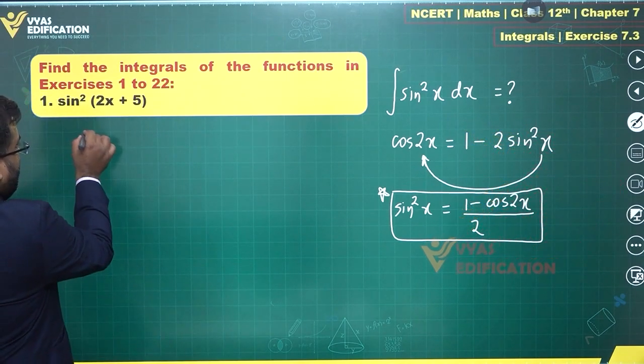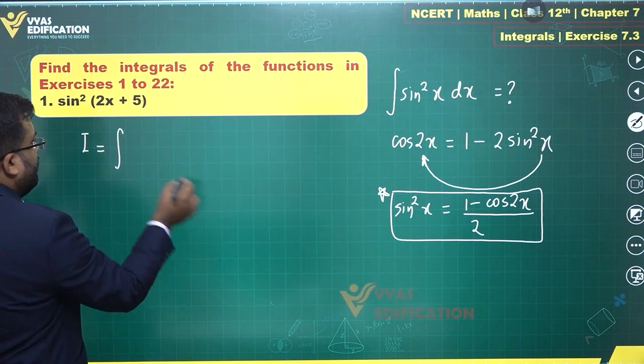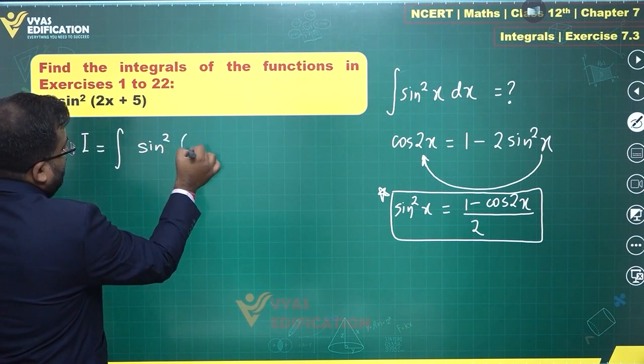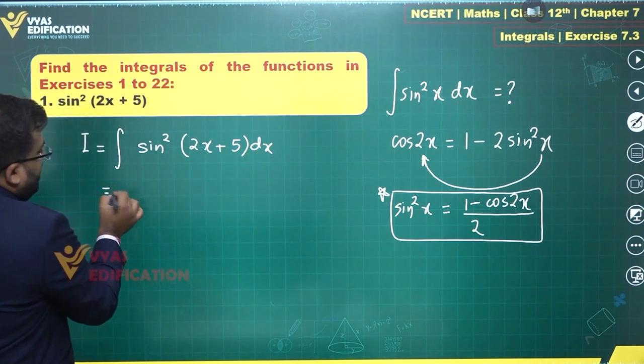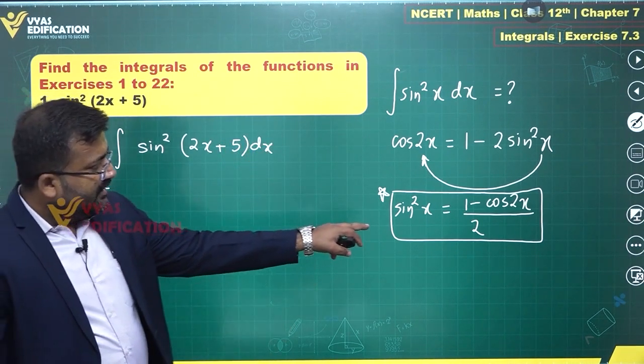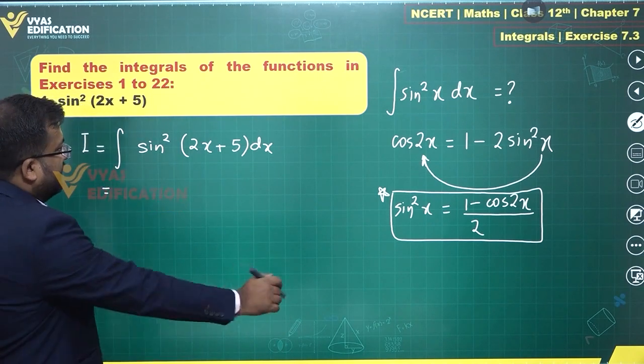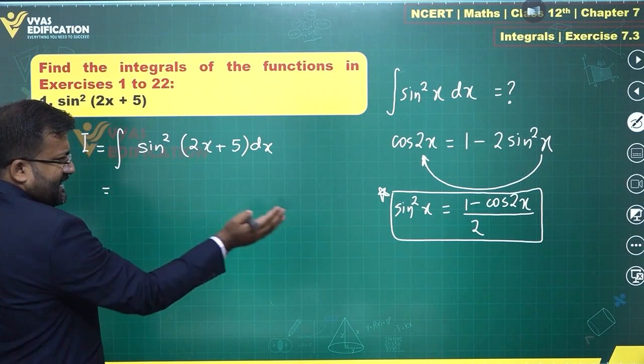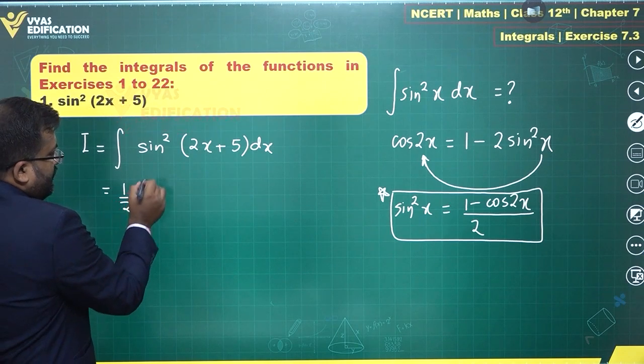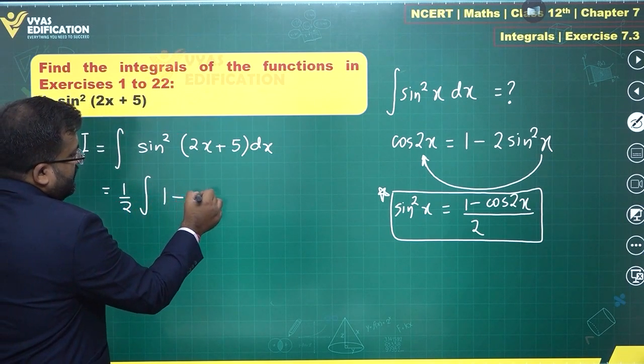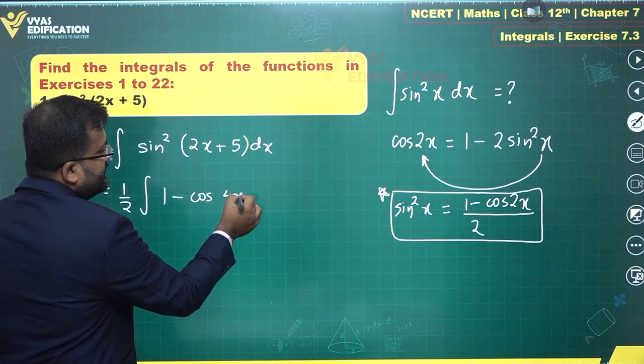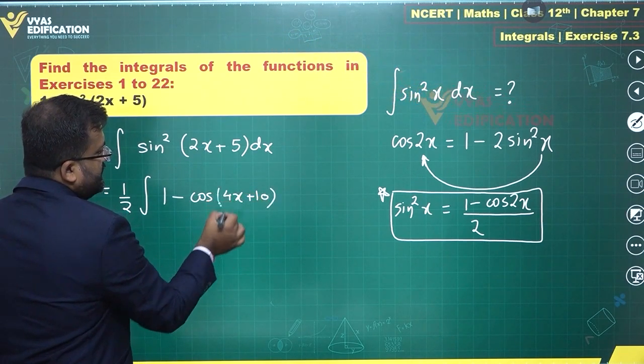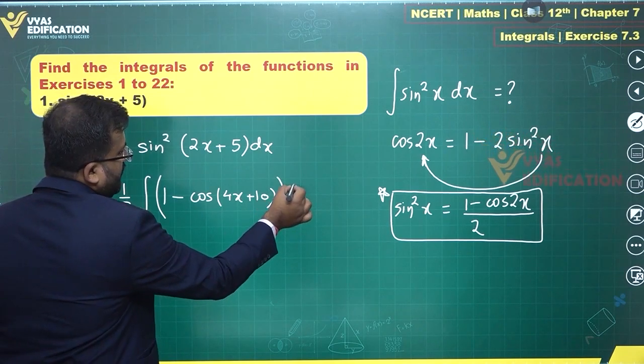So sin²x equals (1 - cos 2x)/2. Therefore, integral of I equals integral of sin²(2x + 5) dx can be written equal to—there is a 2 in the denominator, 1 minus cos of twice the angle. So let us bring that 2 to outside, that is 1/2 times (1 - cos(4x + 10)). This is what you get and this is what I want to integrate.